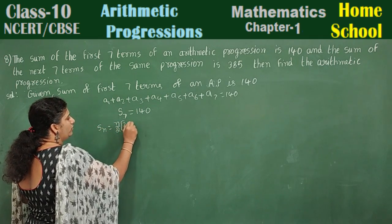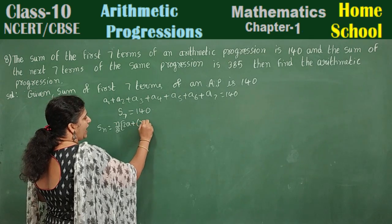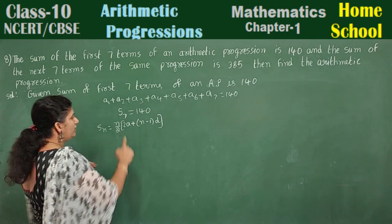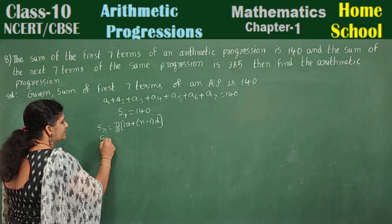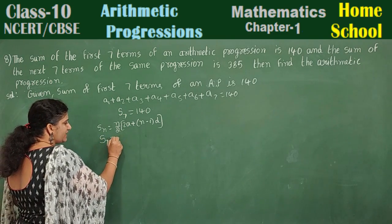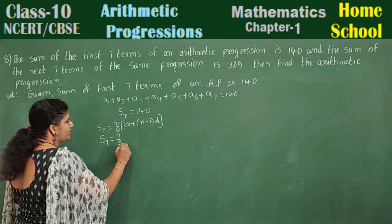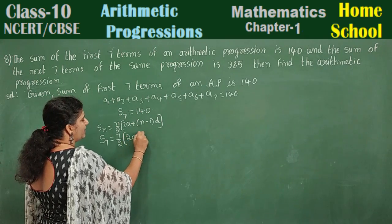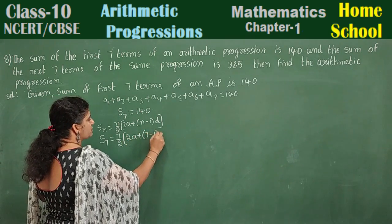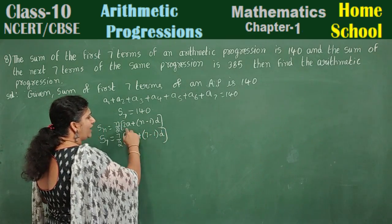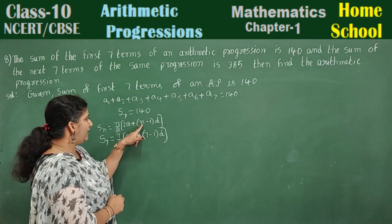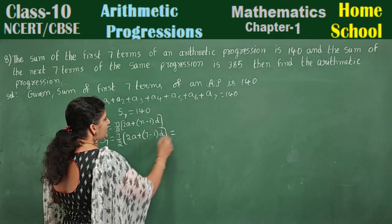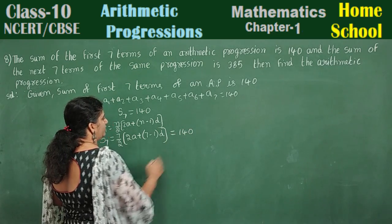S7 — apply the formula. What is the formula? Sn is equal to n by 2 into 2a plus n minus 1 into d. Now write S7: S7 is equal to 7 by 2 into 2a plus 7 minus 1 into d. I don't know a or d — I only know n, which is 7.